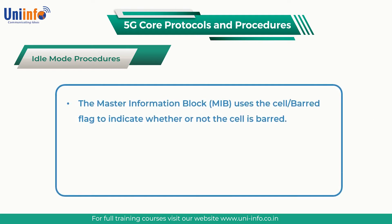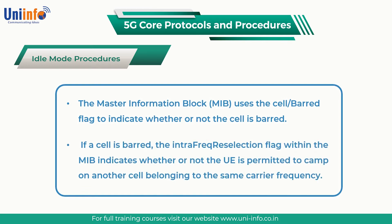The Master Information Block uses the cell barred flag to indicate whether or not the cell is barred. If the cell is barred, the UE is not permitted to camp on that cell and must wait 300 seconds before rechecking the MIB. If a cell is barred, the Intra-Frequency Re-Selection Flag within the MIB indicates whether or not the UE is permitted to camp on another cell belonging to the same carrier frequency.